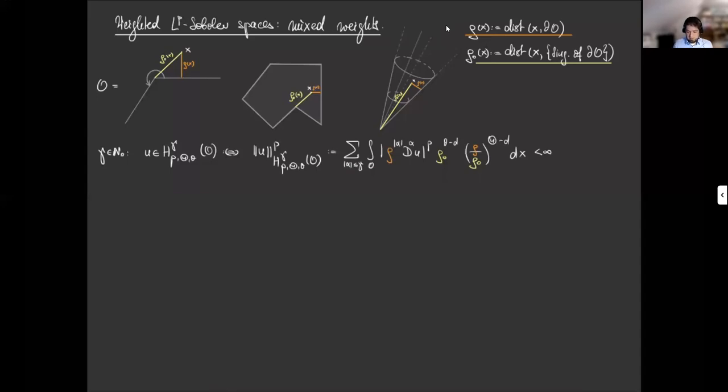Note that the spaces, the weights in these spaces depend on the order of the derivatives. And this way you can describe functions which, for example, vanish at the boundary, but their higher order derivatives are allowed to blow up, up to a certain amount at the boundary.